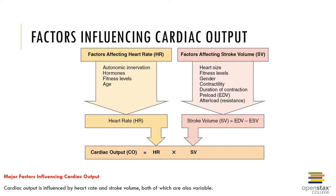Afterload is the amount of tension the contracting ventricles must produce to force the semilunar valves open and eject blood into the aorta. The greater the afterload, the longer the period of isovolumetric contraction, the shorter the duration of ventricular ejection, and the larger the ESV — meaning as afterload increases, ESV increases and stroke volume decreases. Contractility refers to the force of contraction produced at a given preload; as contractility increases, ESV decreases and stroke volume increases. Many drugs used in clinical practice affect contractility, including beta blockers and calcium channel blockers.